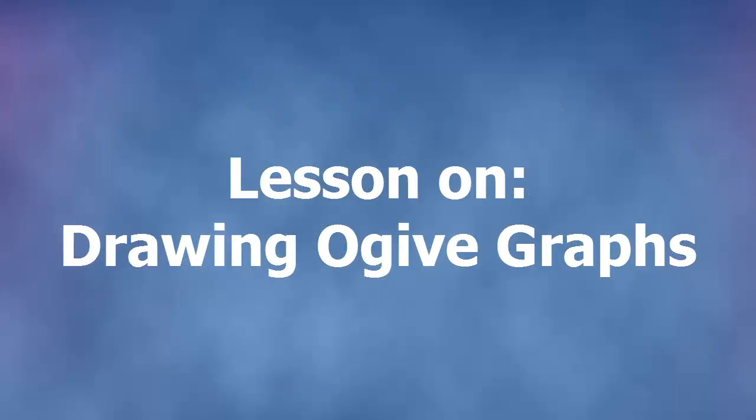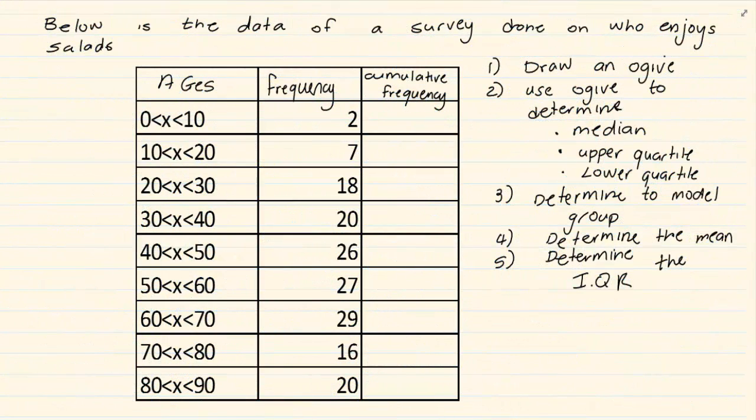Hi and welcome to my maths class. Today we're going to do ogive graphs. Before we do ogive graphs, you need to make sure that you are familiar with mean, median, mode, upper quartile, lower quartile, and interquartile range. These are things that were done in the grade 10 syllabus. If you are not familiar with these, you need to go to your grade 10 summary and revise the work before you continue with this section.